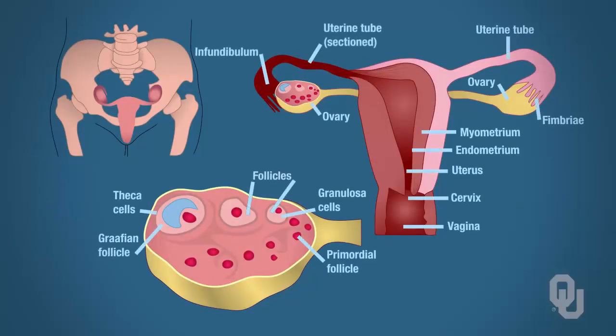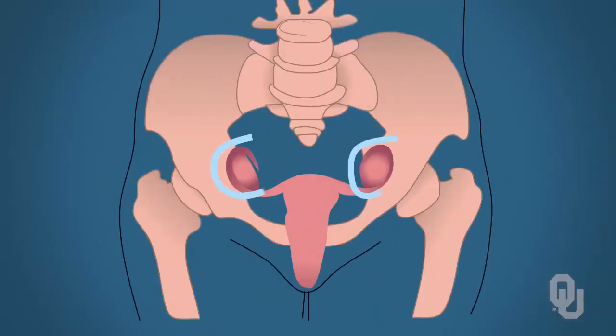Now onto the functional anatomy of the female reproductive tract. To begin with, let's look at the location of the ovaries. There are two ovaries — we have bilateral symmetry, so if you divide this image in half, there's an ovary on the right and one on the left.